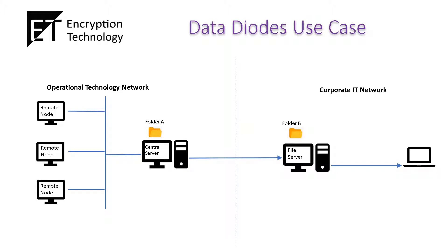In this example, assuming there is an alarm or alert triggered in one of the remote stations, the central server will then initiate a file transfer of the last 12 hours of data from the remote station. The central server, after receiving the file from the remote station, does a secure file transfer to the file server in the corporate IT network.